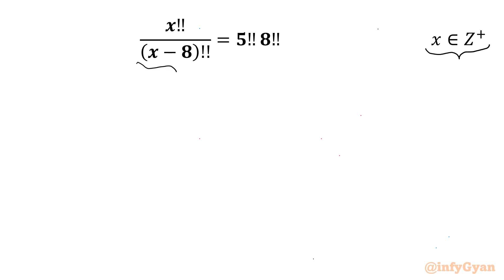By just observing our denominator, we can write x should be greater than or equal to 8. Now I will be writing the double factorial formula. n double factorial is nothing but the product of all positive integers from n to 1 with respect to their even-odd parity.